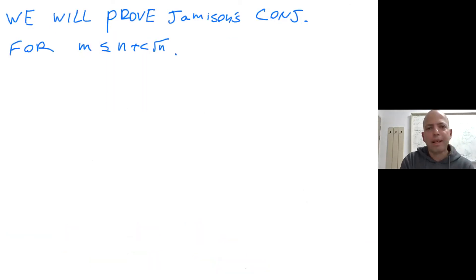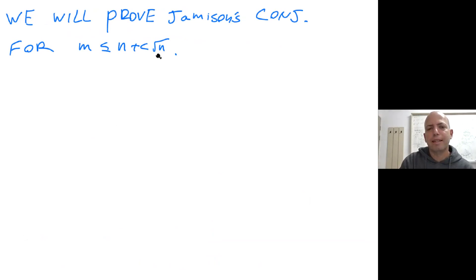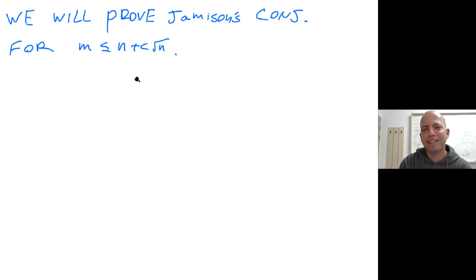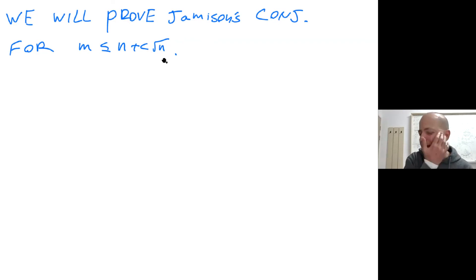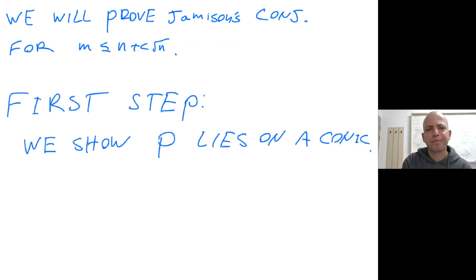In the remaining time, I'll sketch the proof of Jamison's conjecture going beyond the Green-Tao threshold. We can improve from (log log n)^c to √n. This is work in progress, and I would not be surprised if eventually one can prove the full conjecture.